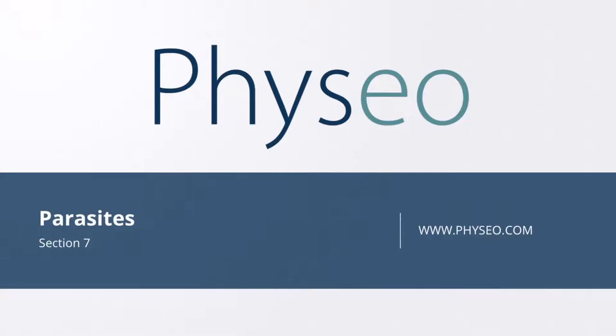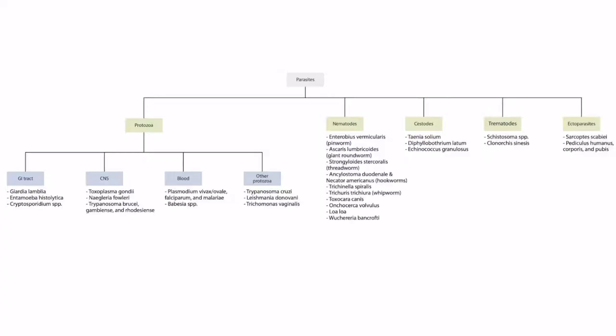Welcome to Section 7 of the Parasites. This is our overview figure showing the parasites you need to know for Step 1. In this lecture, we will be talking about the Plasmodium species: Plasmodium vivax and ovale, Plasmodium falciparum, and Plasmodium malariae.